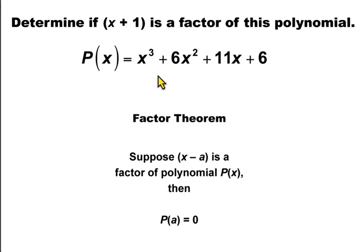According to the Factor Theorem, if x minus a is a factor of polynomial p of x, then p of a is equal to 0.